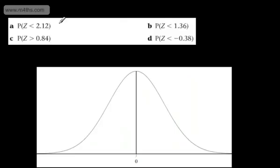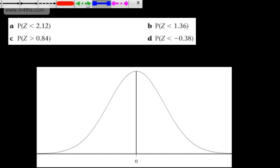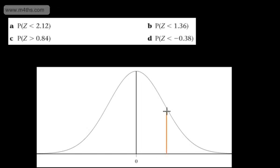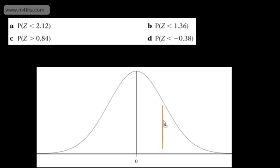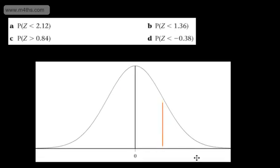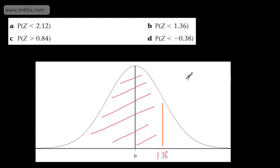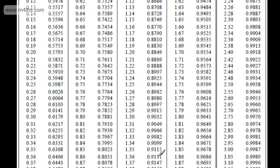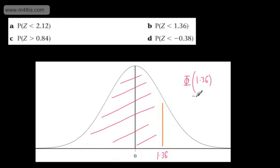Now let's look at the probability that Z is less than 1.36. We put that line on the graph, and from the table phi of 1.36 gives us the probability that Z is less than that value. Looking it up: phi of 1.36 is 0.9131. All these values are given to four significant figures, and you should quote those unless otherwise stated.